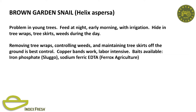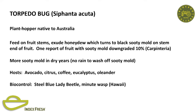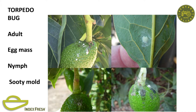Brown garden snails—similar issues, they feed at night. Remove the wraps. There are registered baits. Torpedo bug became economic one year—a grower told me 10% of his fruit was downgraded because of this insect; it creates sooty mold, downgrading the fruit from the black sooty mold. There's a biocontrol in Carpinteria—the steel blue lady beetle. In a dry year, if you don't have much rainfall, sooty mold gets on the fruit at harvest. I've never treated for it; I think rainfall is the best cure. Latania scale in the 1930s was the number one pest—it's under fairly good biological control now. Where I've seen it is in border areas, dusty roads, where equipment comes in.